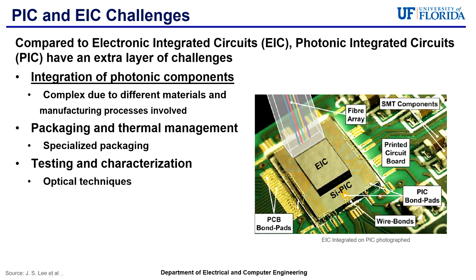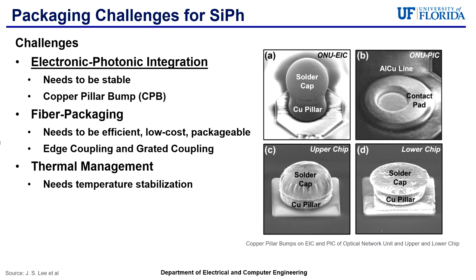While on the topic of challenges, we move on to packaging challenges for silicon photonics. As mentioned previously, electronic photonics integration is a challenge, and flip chip is a common method. Copper pillar bumps, also known as CPB, is one of the materials and methods used for flip chip integration. Another challenge is fiber packaging, which needs to be very efficient, low cost, and packageable. This is where edge coupling and grating coupling come into mind. Edge coupling involves bringing the fiber into close proximity with the edge of the laser or other optical device and then using a lens or other means to focus the light onto the fiber. Grating coupling, on the other hand, involves using a grating structure to couple the light from the laser into the fiber — essentially a series of evenly spaced lines etched onto the surface to help diffract and direct the light onto the fiber.